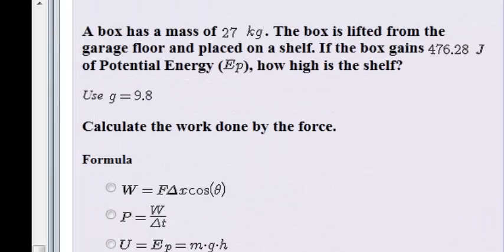A box has a mass of 27 kilograms. The box is lifted from the garage floor and placed on a shelf. If the box gains 476.28 joules of potential energy, how high is the shelf?